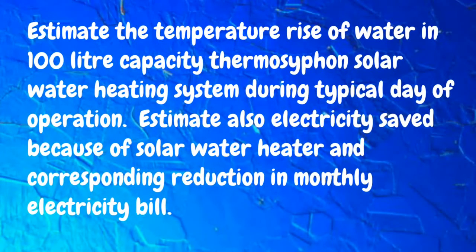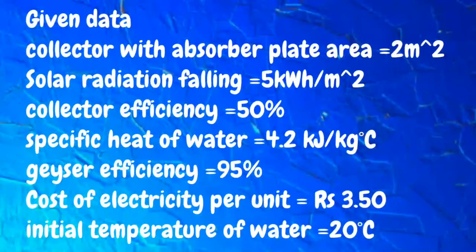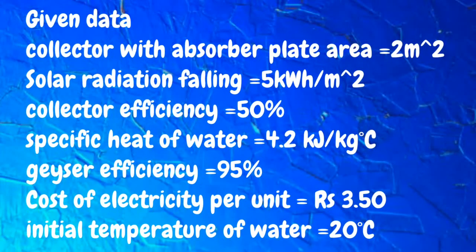Estimate also the electricity saved because of the solar water heater and corresponding reduction in monthly electricity bill. Given data: collector with absorber plate area 2 meter square, solar radiation falling 5 kilowatt hour per meter square, collector efficiency 50%, specific heat of water 4.2 kilojoule per kilogram degree Celsius, geyser efficiency 95%, cost of electricity per unit 3.50 rupees, initial temperature of water 20 degree Celsius.